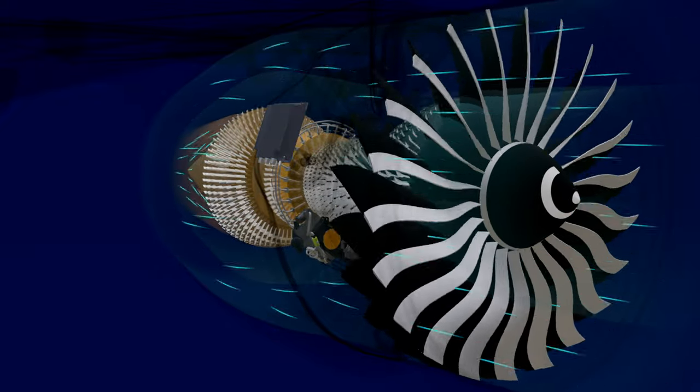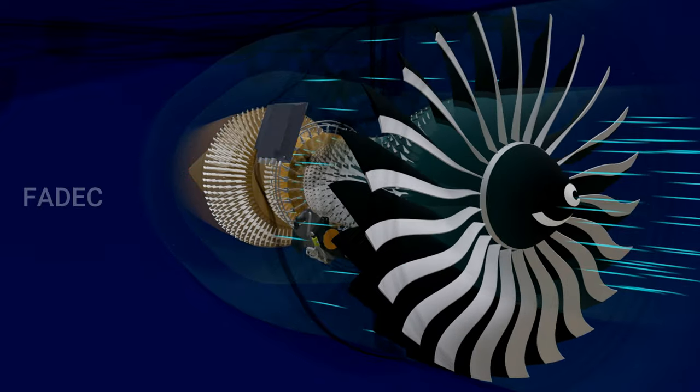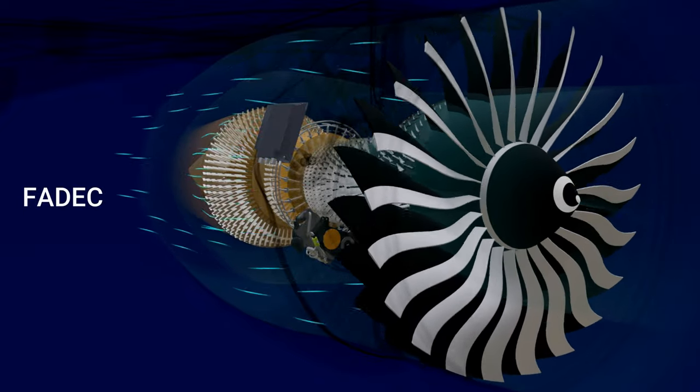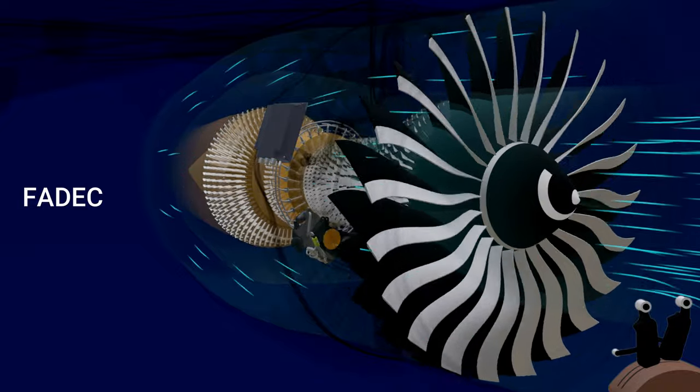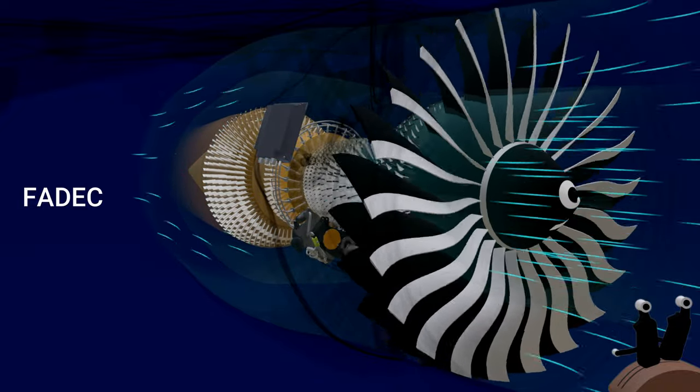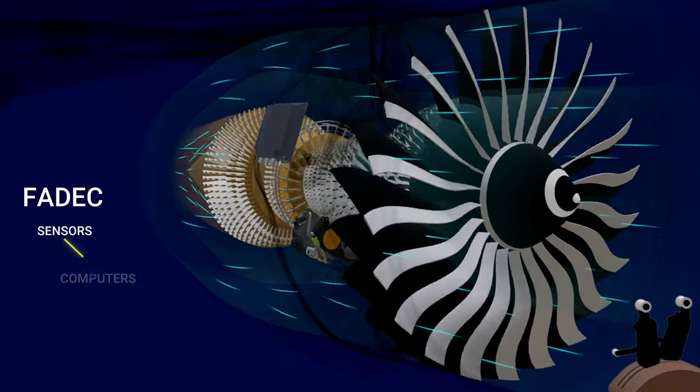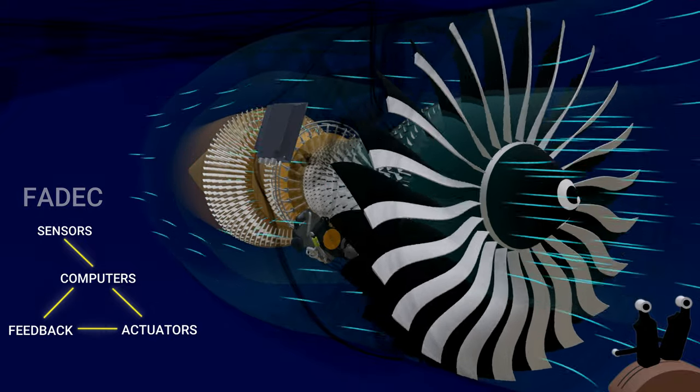Modern-day jet engines are built to work on a system called the Full Authority Digital Engine Control. Except for few engine controls, everything else lies in the hands of a complex closed-loop system involving sensors, computers, actuation mechanisms, and feedback systems.